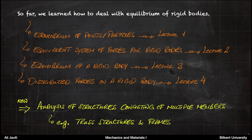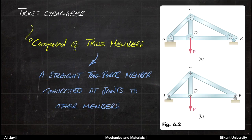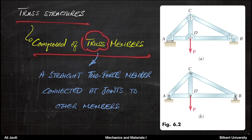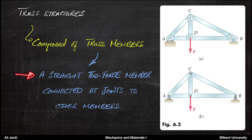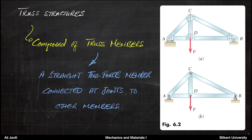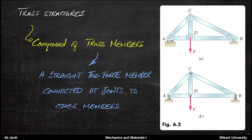An example of such systems is truss structures and frames. A truss structure is commonly used for bridges, and basically a truss structure is composed of so-called truss members. A truss member is essentially a straight two-force member that is only connected at joints to other members. These joints do not apply any moment — they are just applying forces.